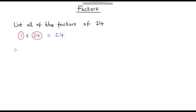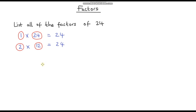So is 2 a factor of 24? Well yes it is, because 2 times 12 is 24. So 2 and 12 are both factors of 24. Now what about 3 — is 3 a factor of 24? Well if we do our 3 times tables we get 3 times 8, which does give us 24. So 3 and 8 are also factors of 24.